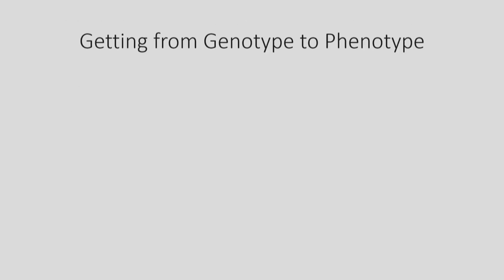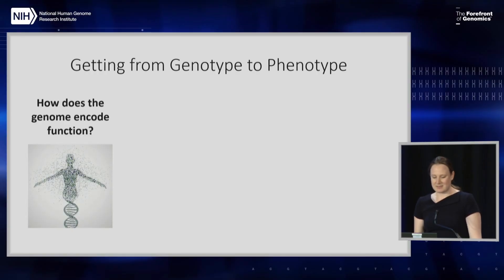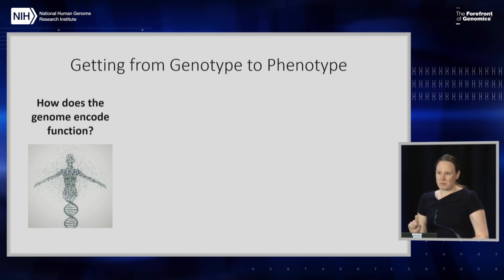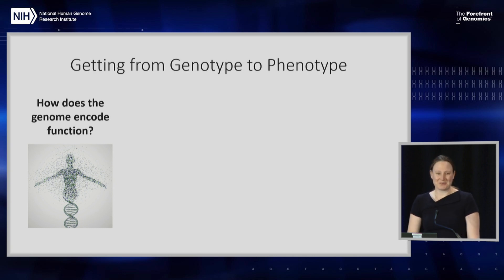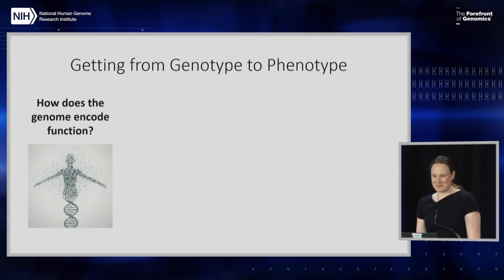So how do we get from genotype to phenotype? I see three key areas. The first is we need to understand how the genome encodes function — what are all the genes doing? What are all the regulatory elements? I study enhancers, and I couldn't tell you how many enhancers are in the human genome. And beyond that, which regulatory elements regulate what? Which enhancers link to which genes? It's shocking how little we know at the moment about this.